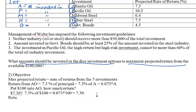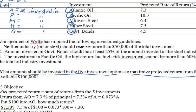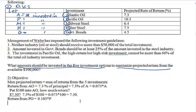In a similar way, the return from Pacific Oil is 0.103 times P, the amount invested, and so forth. So we need to take each rate of return, move the decimal point two places to the left, and multiply by the corresponding variable.